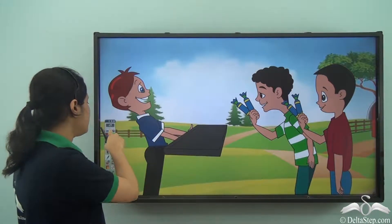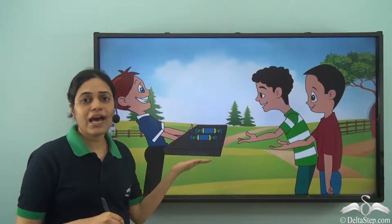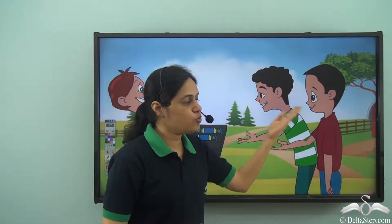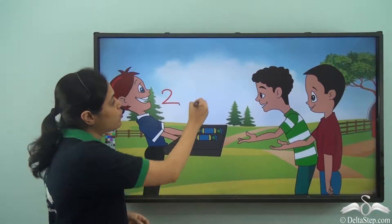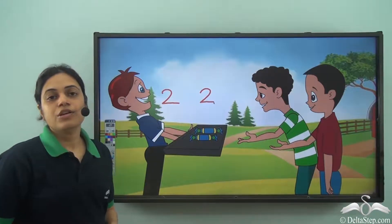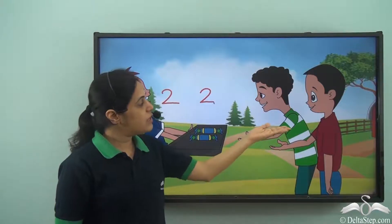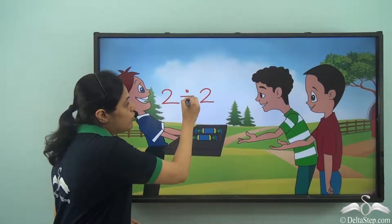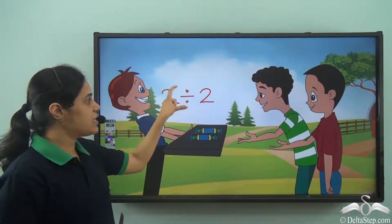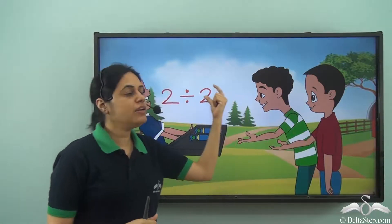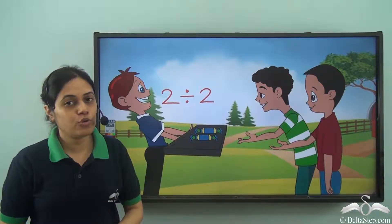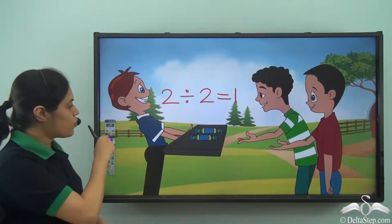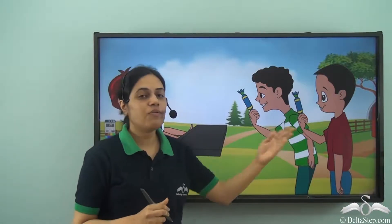Now suppose Rohan has just two toffees and he wants to divide these two toffees between his two friends. So how many toffees will each get? The answer will be two divided by two — two toffees divided between two friends. Two divided by two is equal to one, so each friend will get one toffee.